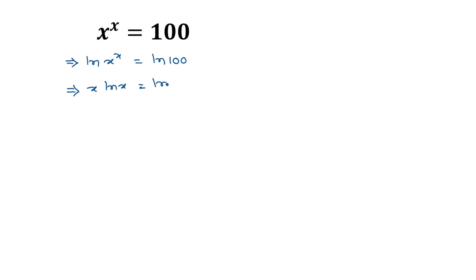Now x can be written as e to the power ln of x. So we have e to the power ln of x, and this ln of x times e to the power ln of x is equal to ln of 100.